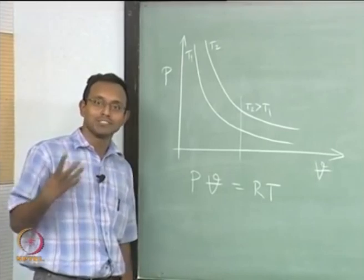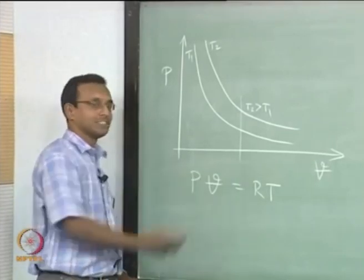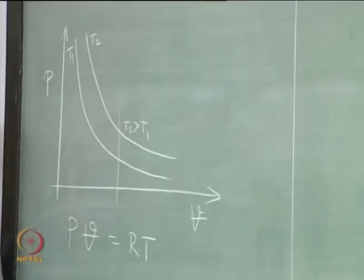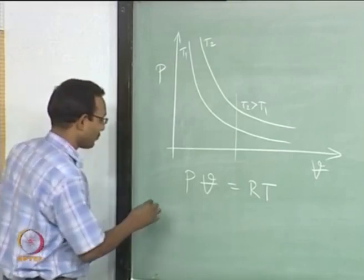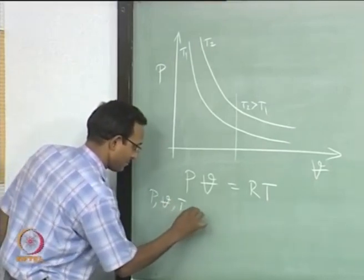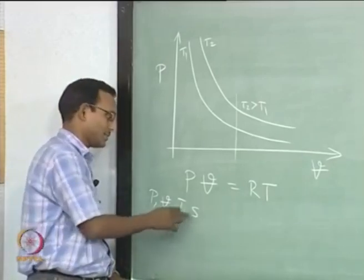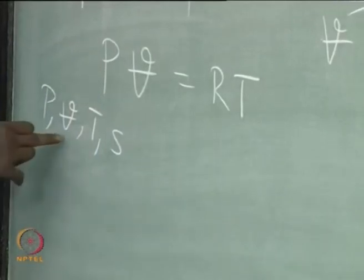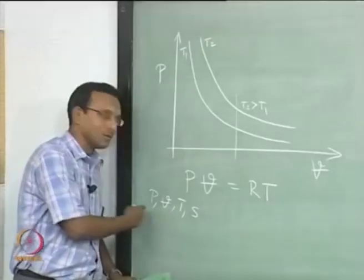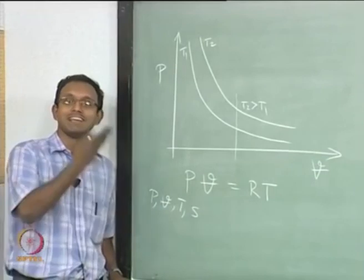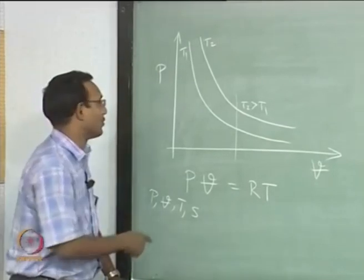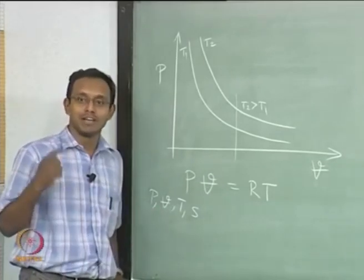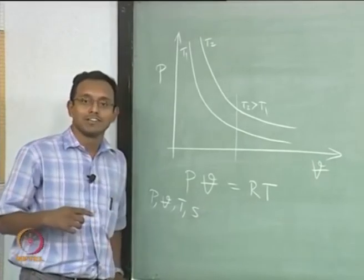Later we will talk about various processes and I want you to plot them in different state diagrams. This P-V is just one particular set of axis variables. I could choose temperature and entropy, or pressure and temperature. Predominantly we use only these four variables: pressure, specific volume, temperature, and entropy. Whatever two axes are chosen, you should be able to plot any particular process.